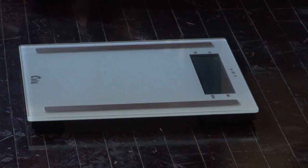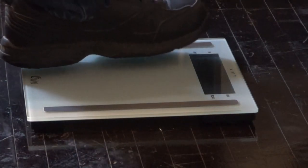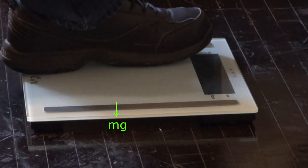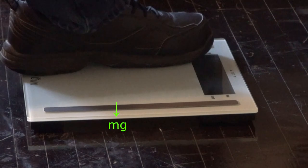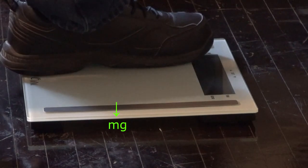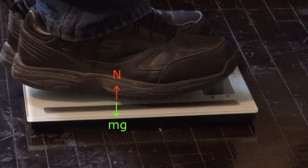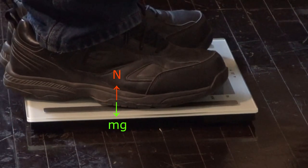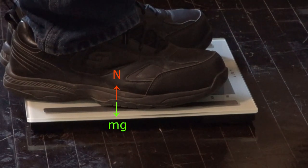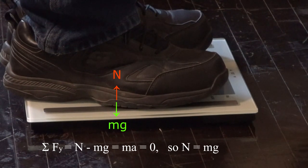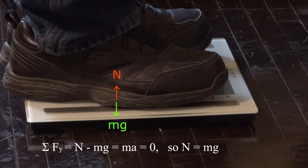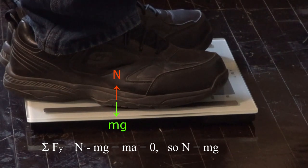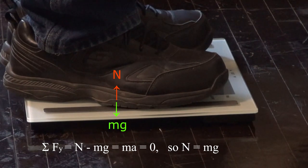When you stand on a bathroom scale, the gravitational attraction between you and the earth pulls you downward with your weight Mg against the surface of the scale. In reaction, that surface pushes upward with the normal force. The sum of the vertical forces is N minus Mg equals zero, since the acceleration is zero. The bathroom scale measures the normal force N.